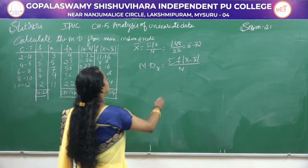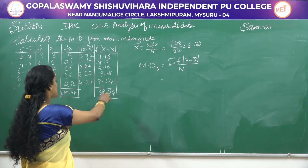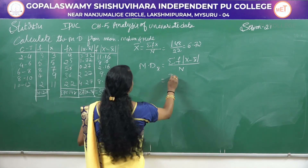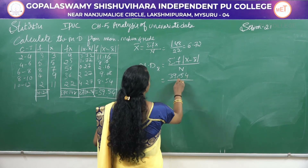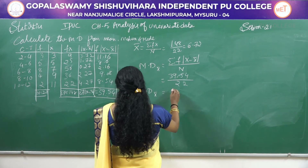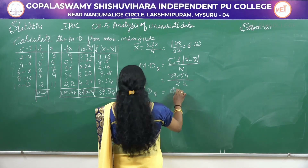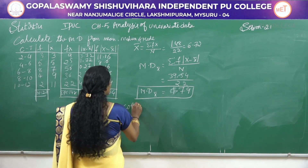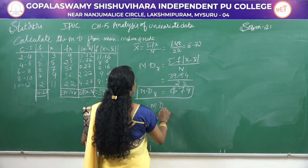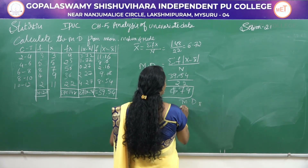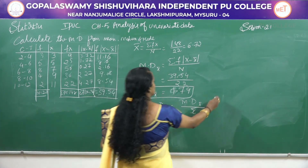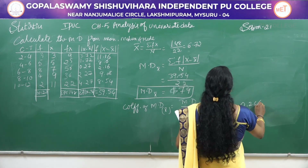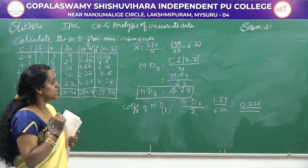Substitute in the formula: Σf|x − x̄| = 39.54 and N = 22. So mean deviation using mean = 39.54 / 22 = 1.76. Along with this, coefficient of mean deviation using mean = MD(x̄) / x̄ = 1.79 / 6.72 = 0.2667. This is the coefficient of mean deviation using mean.